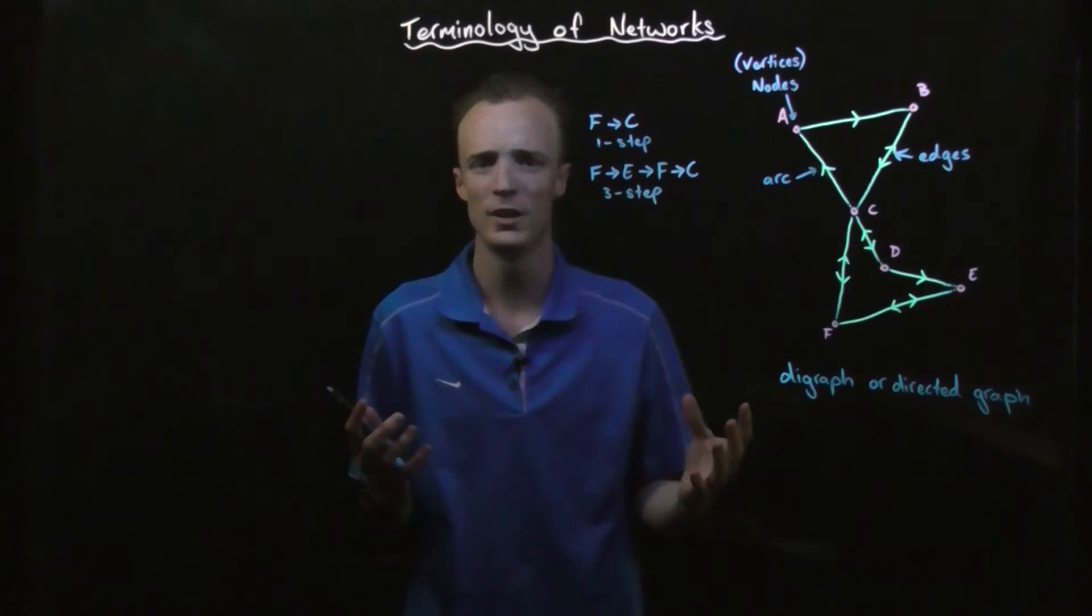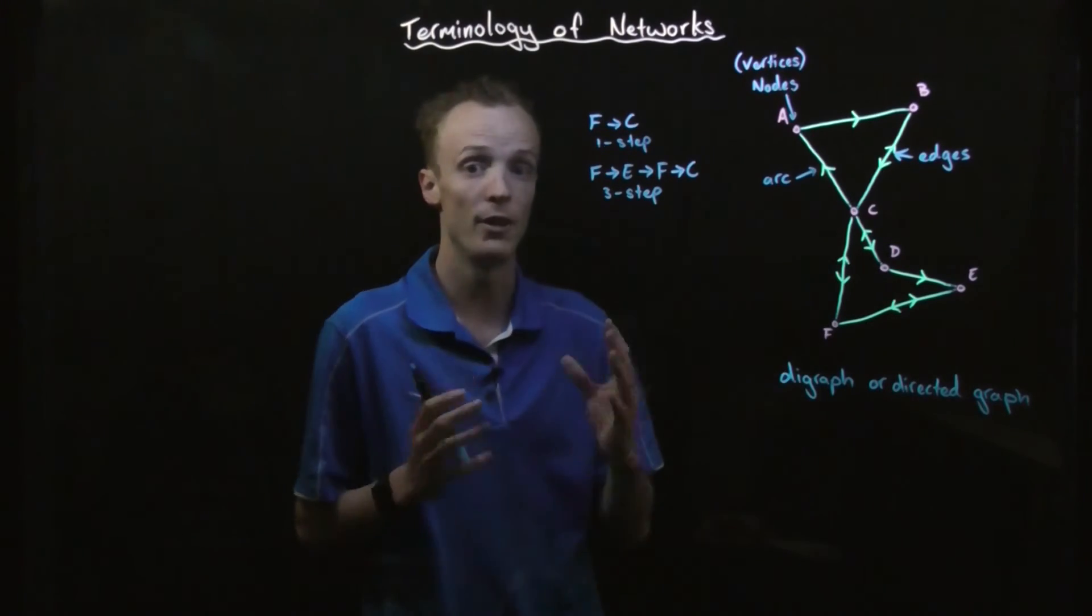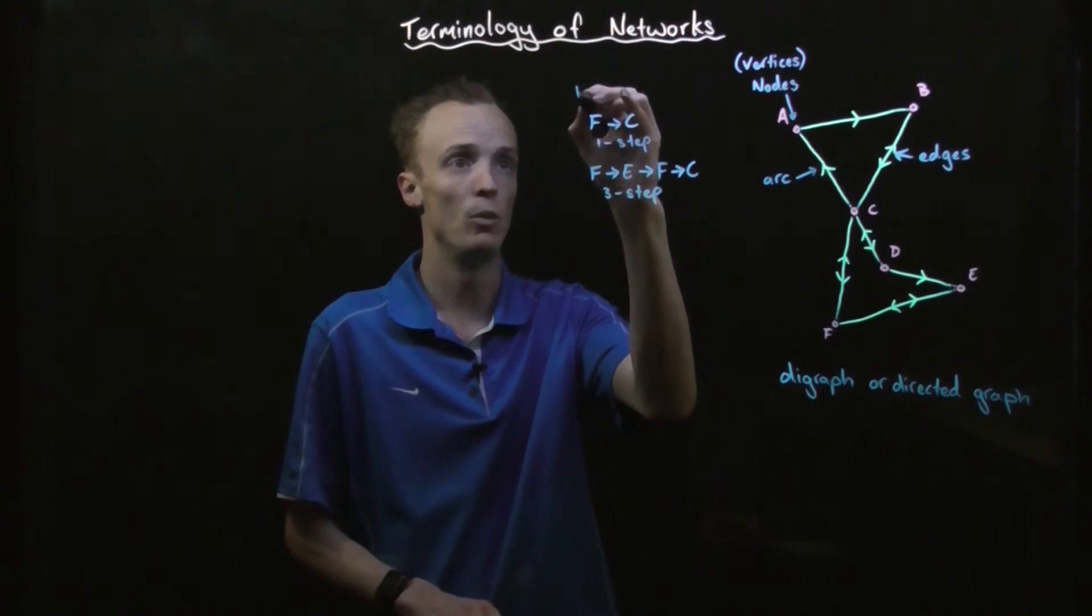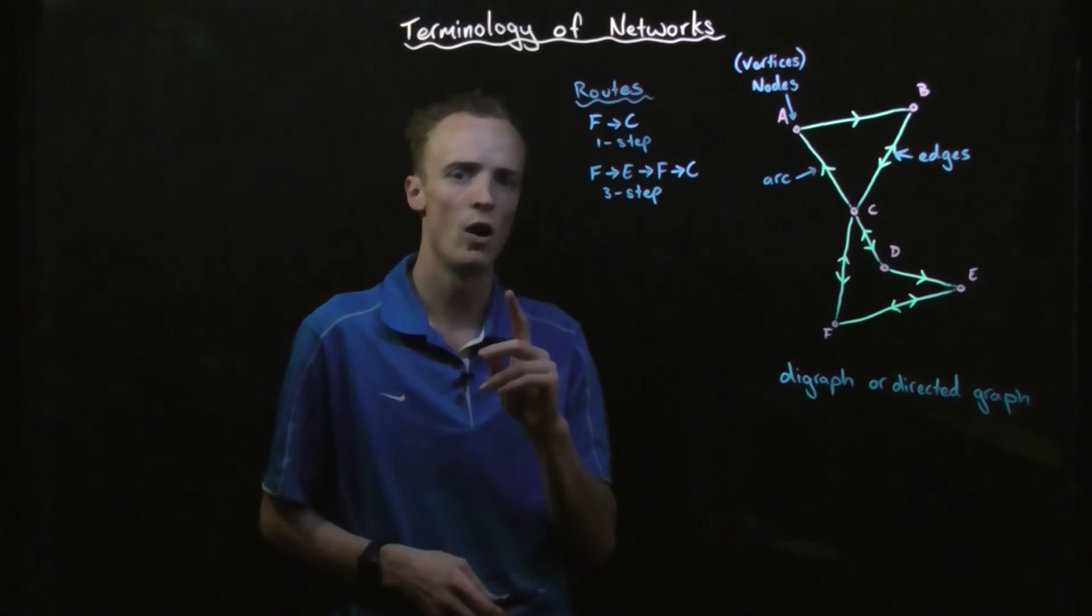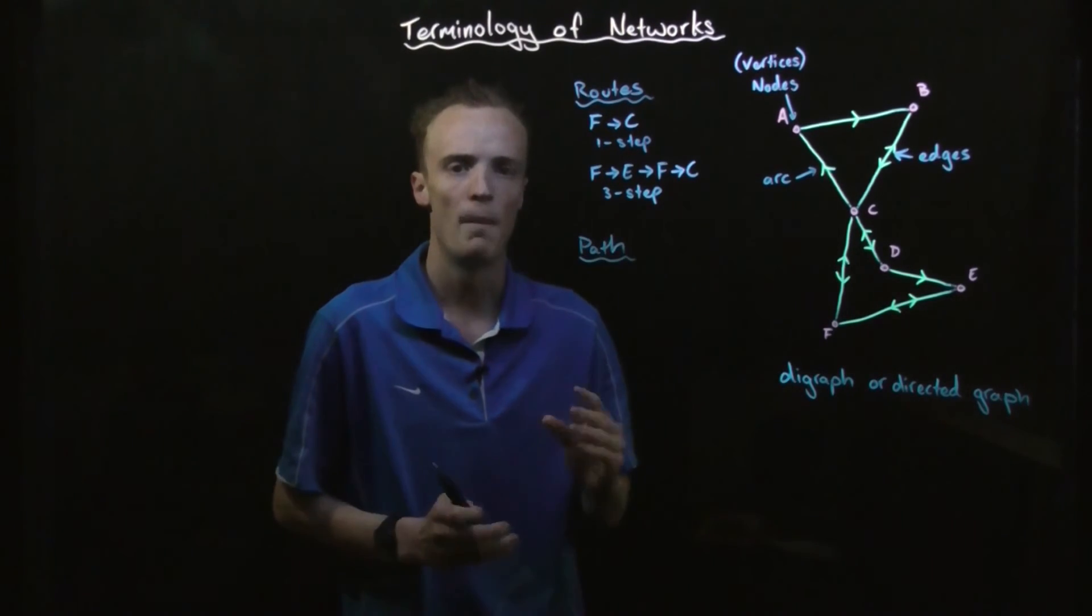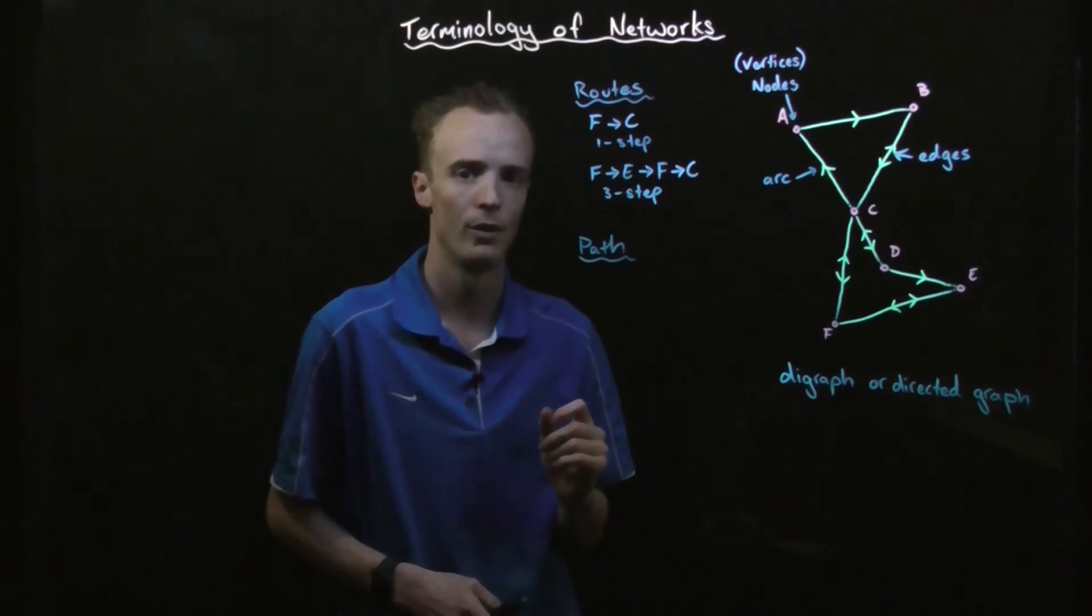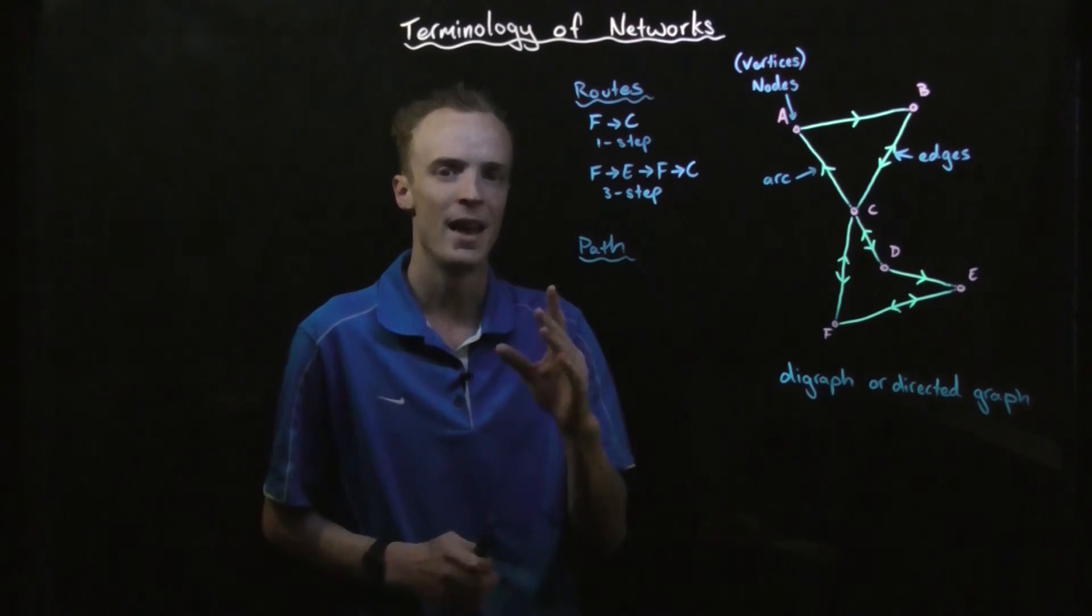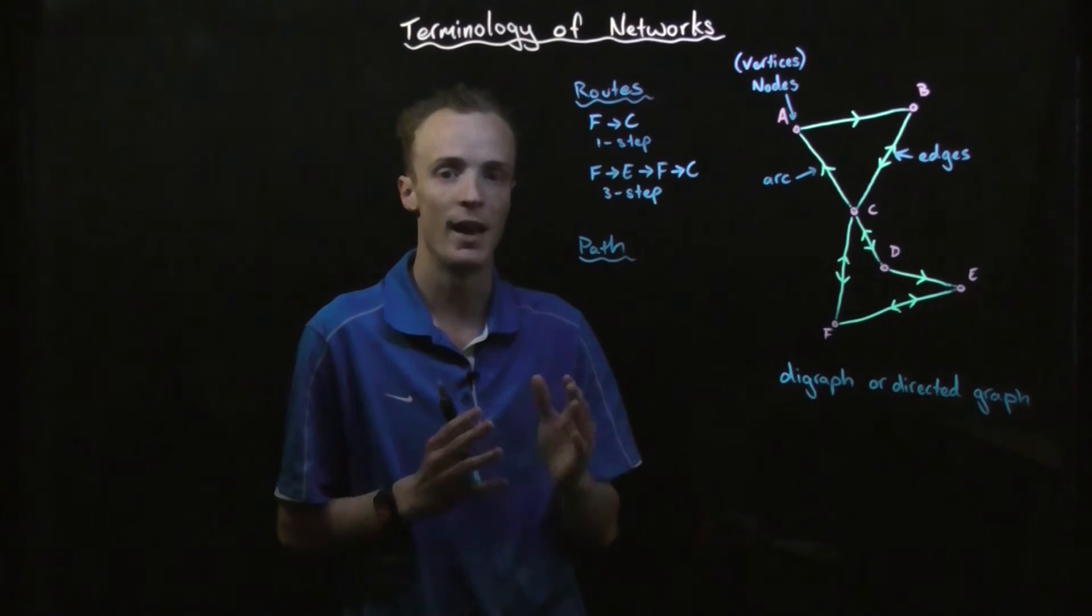However, we don't refer to these things as journeys. If we're starting at one node and we're traveling to another node, can be any node including the node that we started at, we consider these things to be called routes. Now there's one special type of route that exists and we refer to them as a path. A path is a type of route. Both of these are routes, however only one of them is a path. What the difference between a route and a path is, a path must start at one node and finish at a different node without ever traveling through any node twice.